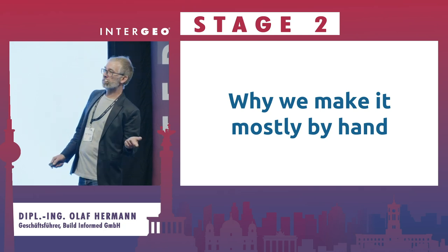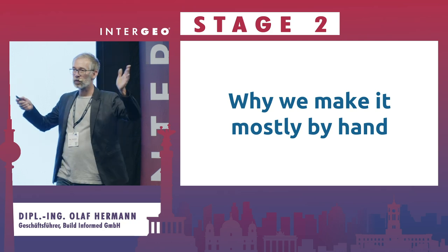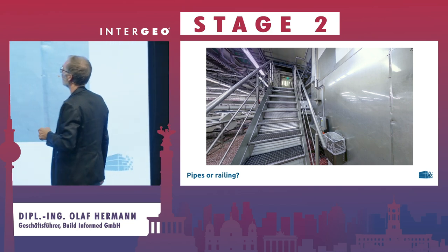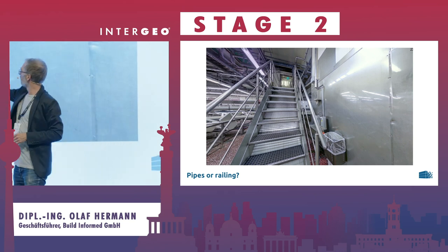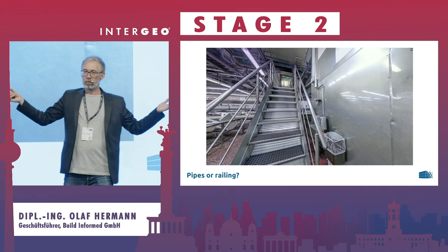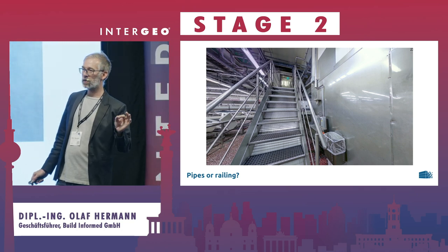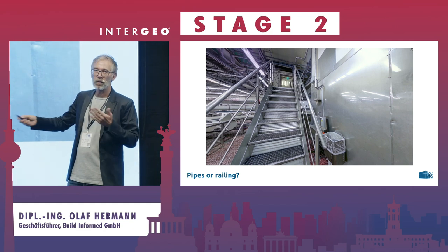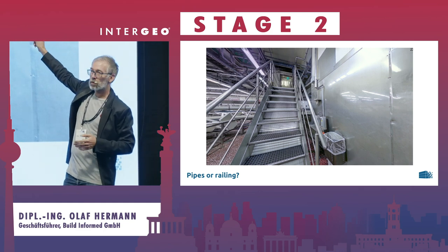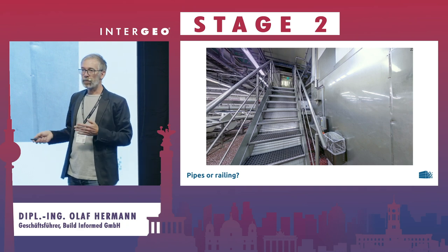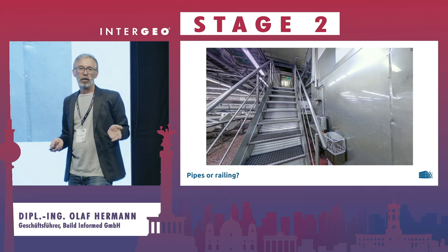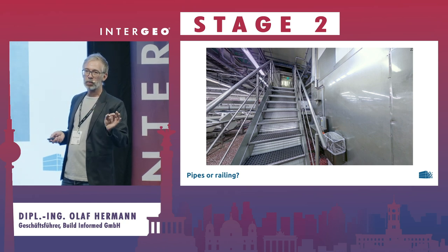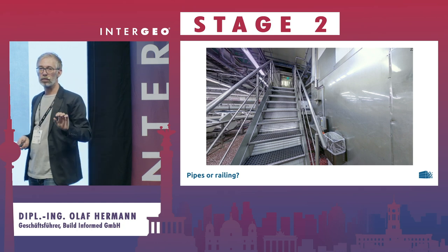Now we come to the question: why do we make it by hand? You might find some software vendors, there are some solutions, but the answer is quite easy. We had a big plant — we used the automatic solution, and the question is: what do you see here? I see railings of a stair. The software was seeing pipes. We brought it in, we had a lot of pipes in the model, and we said: which are the good pipes and which are the bad ones? And perhaps the pipes on top are missing. In the end we spent more time cleaning up the model, and we said: let's do it by hand. We tried some other solutions like Faro as-built, which is semi-automatic and works much better. Sometimes we use it, sometimes not. Depends.